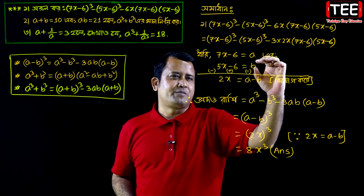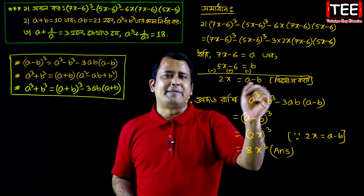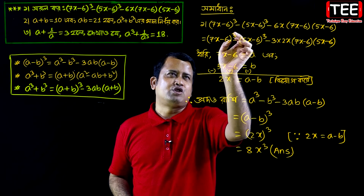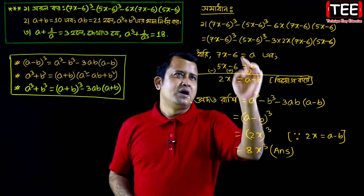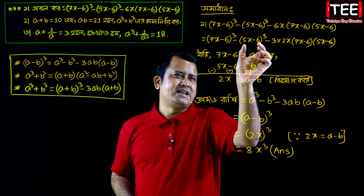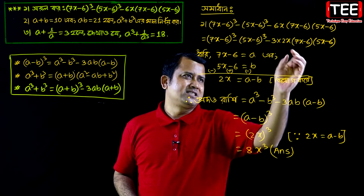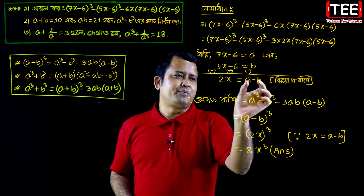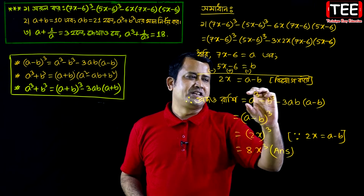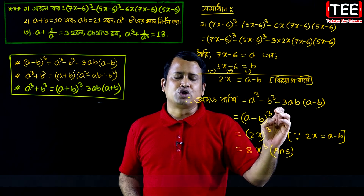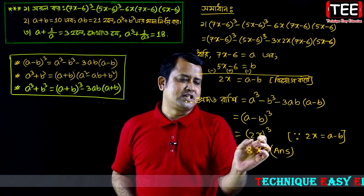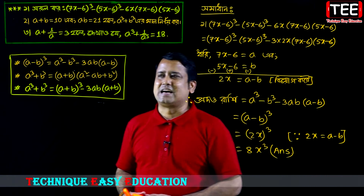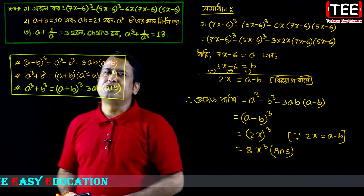So we get a minus b whole cube, where a minus b equals 2x. Therefore the answer is 2x whole cube, which equals 8x cube. That is the answer for this problem.